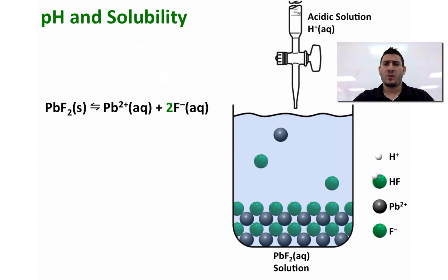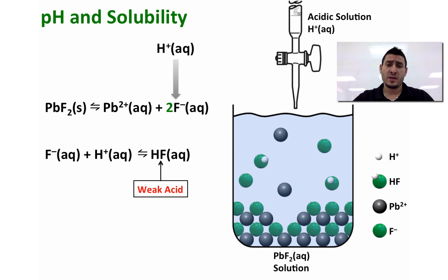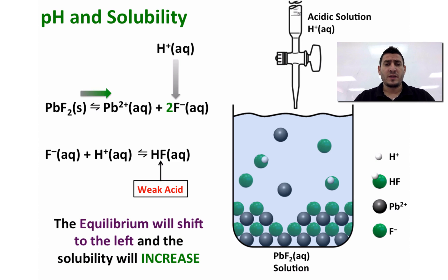Let's take another example of the common ion effect — the effect of pH on solubility. When we add H⁺ (an acidic solution), the H⁺ will react with F⁻ to form HF, which is a weak acid. A weak acid will not dissociate in water readily, so the concentration of F⁻ in solution will decrease. According to Le Chatelier's principle, removing one of the products shifts the equilibrium toward making more of that product, so the dissolution of lead fluoride increases — the solubility increases.